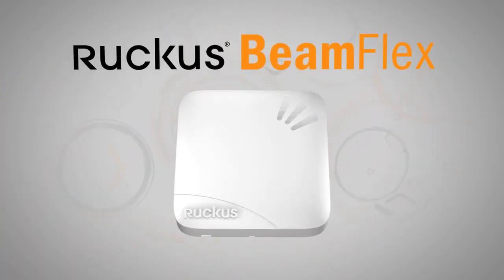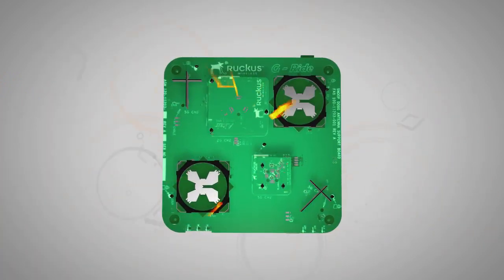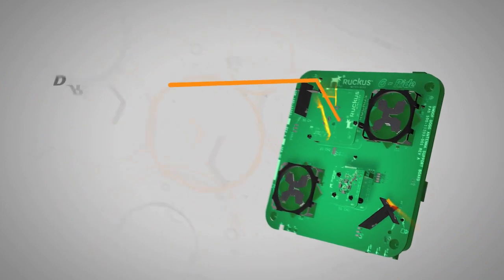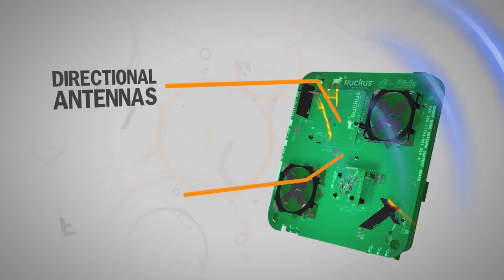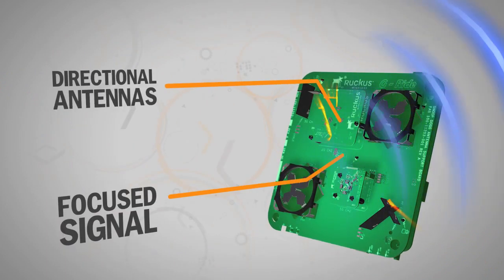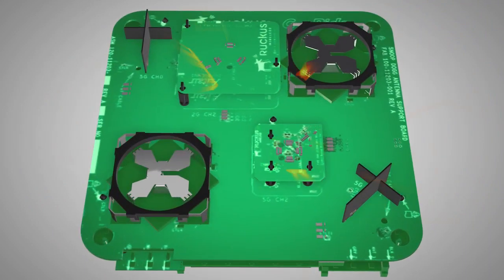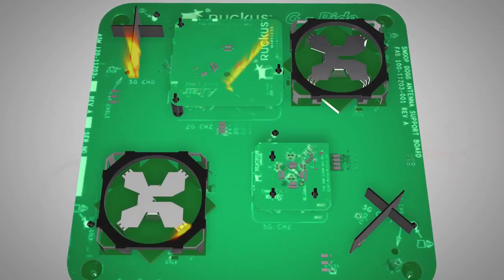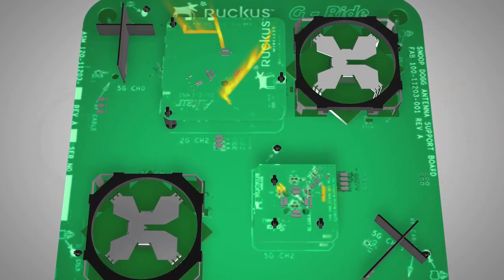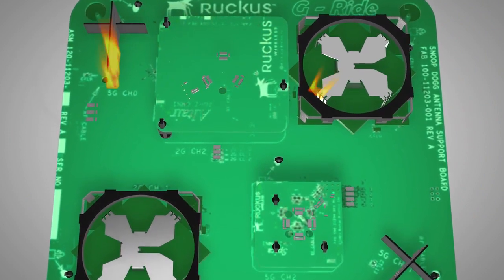Here's how it works. Through patented technology, BeamFlex automatically creates a directional Wi-Fi signal on the fly for every client. It does this by activating combinations of individual antenna elements, each working in concert to create the best possible signal path that yields the highest data rate.